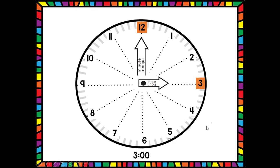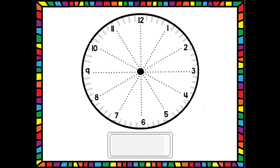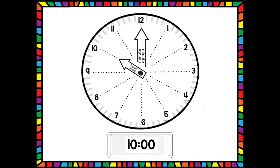I'm going to give you a few different times and I want you to think about how you would show that on your clock. Remember, all of these are exact hours, which means our minute hand is always going to stay on the twelve. What time does this digital clock want us to show? Ten o'clock! We know our minute hand is going to stay on the twelve because it's o'clock. Where are we going to put our hour hand? We're going to point our hour hand to the ten. Now we are showing ten o'clock.